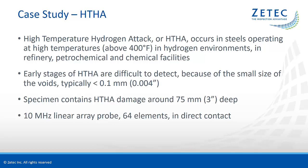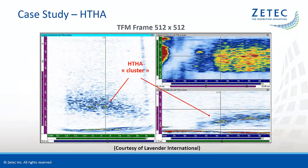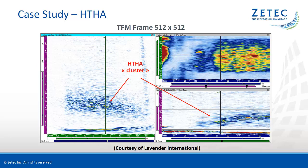Early stages of HTHA are very difficult to detect because of the small size of the voids, typically smaller than a tenth of a millimeter. The considered specimen contains important HTHA damage at a depth of roughly 3 inches. The same 10 MHz linear array probe from the first case study was used. We can observe that a high-frequency probe in combination with TFM focusing allows detection of reflectors several times smaller than the wavelength. Industry experts consider that the excellent focusing capability of TFM is an important tool for earlier detection and better characterization of HTHA.